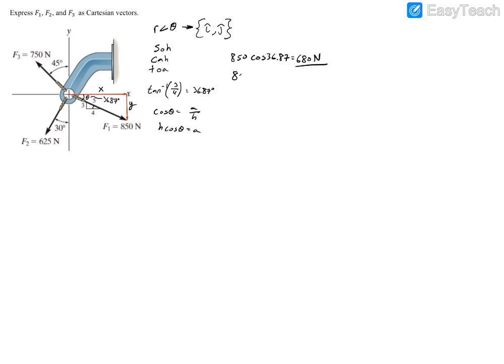And then we have our Y, which is 850 sine 36.87. It's really the same idea, because you have your sine theta equals opposite over hypotenuse. Your opposite is your Y. Multiply both sides by the hypotenuse, you'll have 850 sine theta equals your opposite, or 510 newtons.